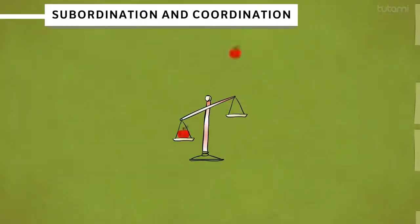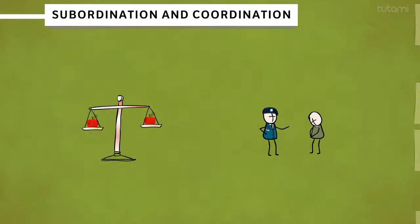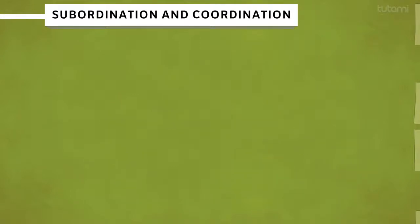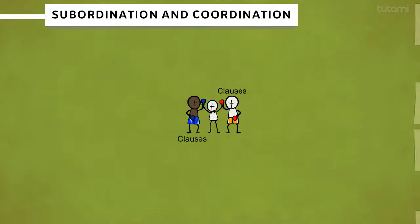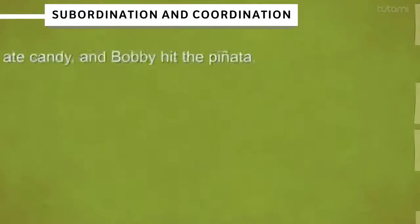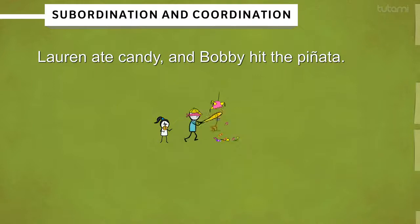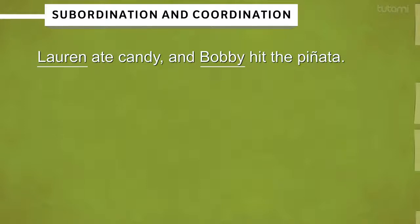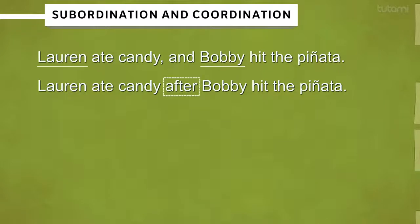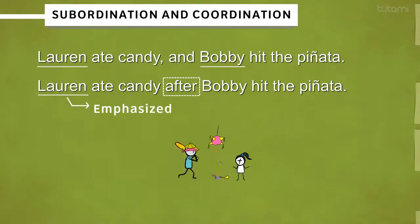To coordinate is to bring things into balance. To subordinate is to make things less important. When we use coordinating conjunctions to combine independent clauses in a sentence, each clause is equal in importance. For example: "Lauren ate candy and Bobby hit the piñata." Neither Lauren's nor Bobby's activity is emphasized in this sentence. If we use a subordinating conjunction, however, it's different: "Lauren ate candy after Bobby hit the piñata."